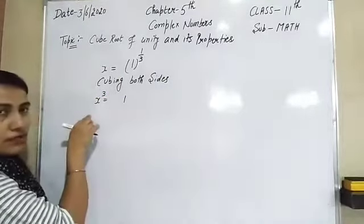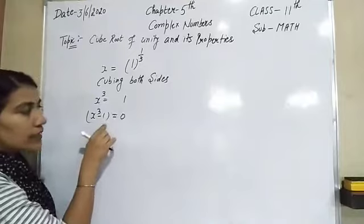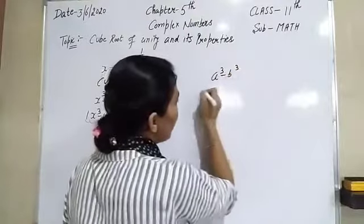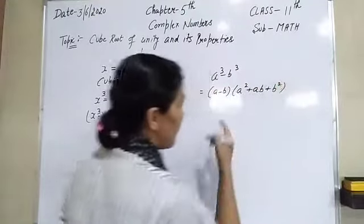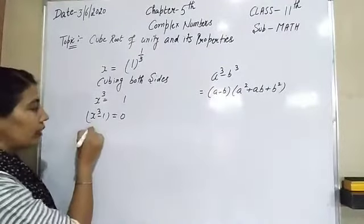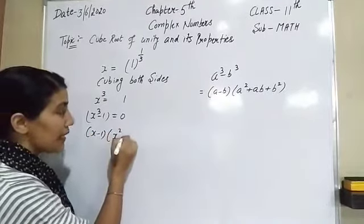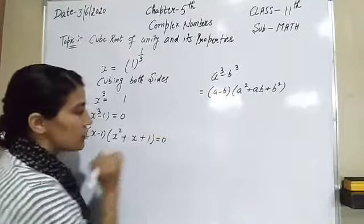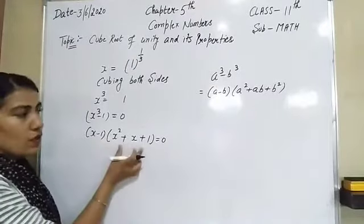After cubing both sides, on this side we have x³ and on this side we have 1. Bringing it over: x³ minus 1 equals zero. Now use the identity a³ minus b³ equals (a minus b)(a² + ab + b²). The value of a is x and b is 1, so it becomes (x minus 1)(x² + x + 1) equals zero.